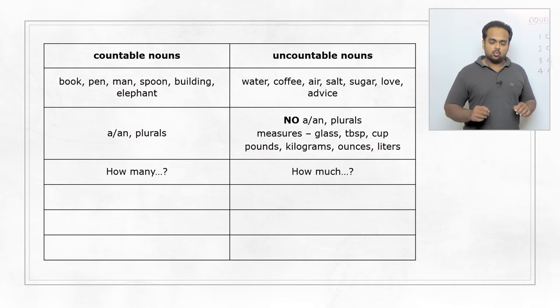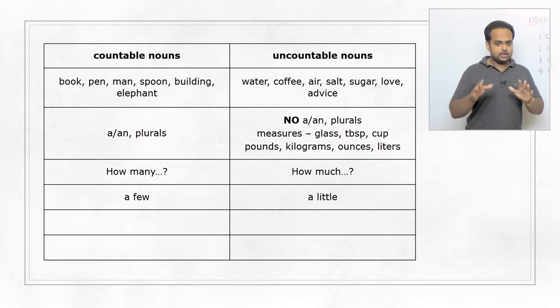With countable nouns, we use a few to mean a small number. I can say, oh, there are only a few computers in my office. I don't know the exact number, but it's a small number. Or I can say, there's only a little water in the jar. So with uncountable nouns, we use a little. This is very important.